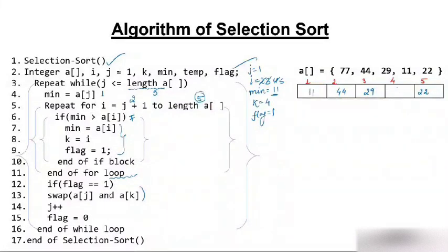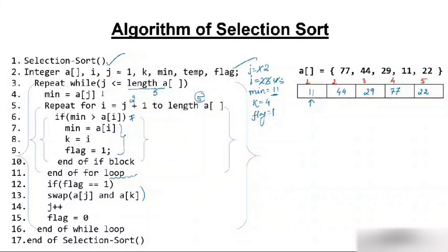Is minimum (77) greater than a[5] (44)? Yes. So minimum becomes 44, k = 5, flag = 1. i cannot be incremented further. We come out of the for loop. Flag is 1 — so we swap a[4] and a[5]. 44 comes to position 4 and 77 goes to position 5.